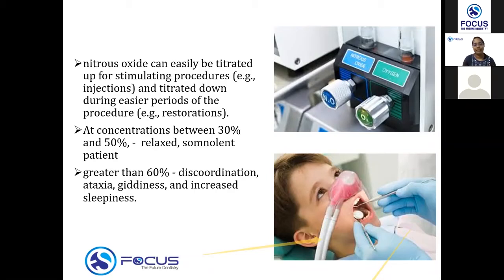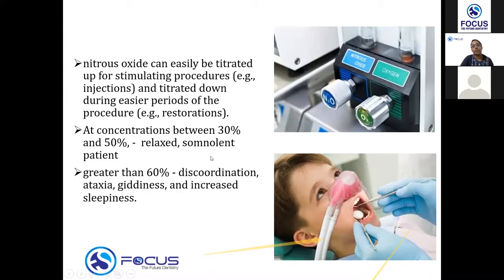The level of nitrous oxide can be easily titrated. For higher-demand procedures like anesthesia injections or extractions, you can give more nitrous oxide, while for simpler procedures like restoration or scaling, you can reduce the amount. By turning the knob, you can easily adjust the level. Usually at 30 to 50 percent concentration of nitrous oxide, you get a relaxed and somnolent patient. If nitrous oxide exceeds 60 to 70 percent, ataxia, giddiness, and increased latency are more likely.